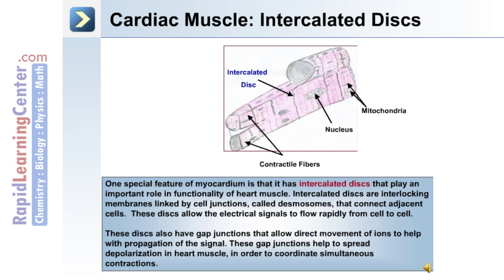One special feature of myocardium or heart muscle is the presence of intercalated discs. These play an important role in functionality of heart muscle. These discs are interlocking membranes linked by cell junctions called desmosomes. These connect adjacent cells together.